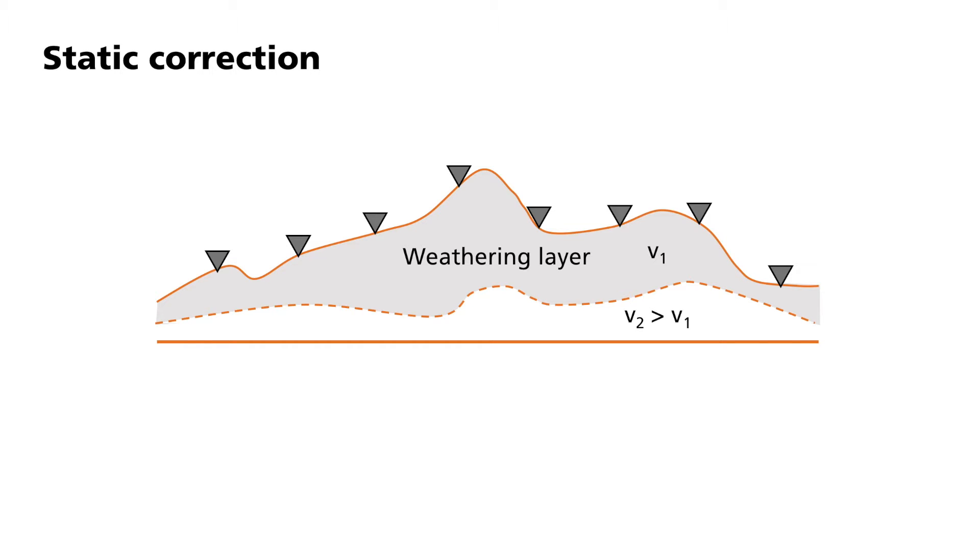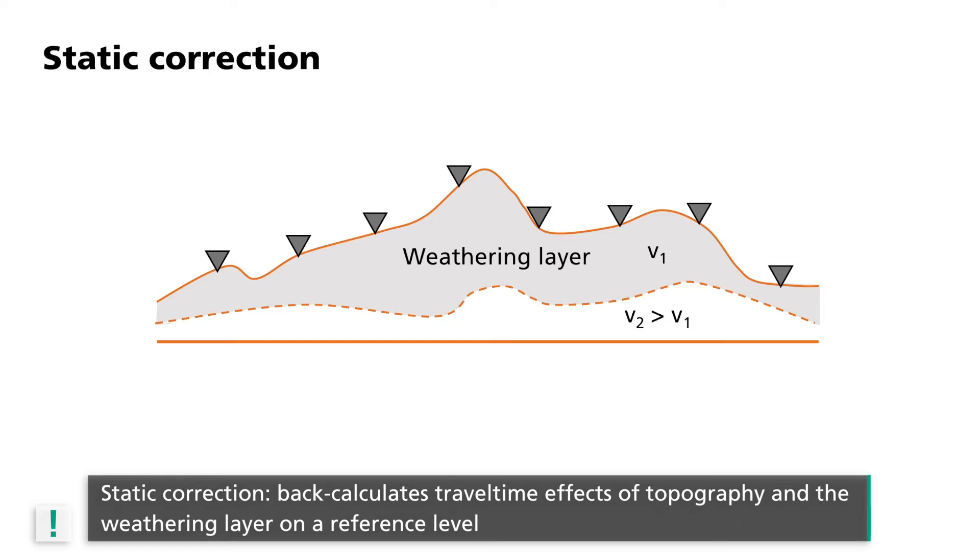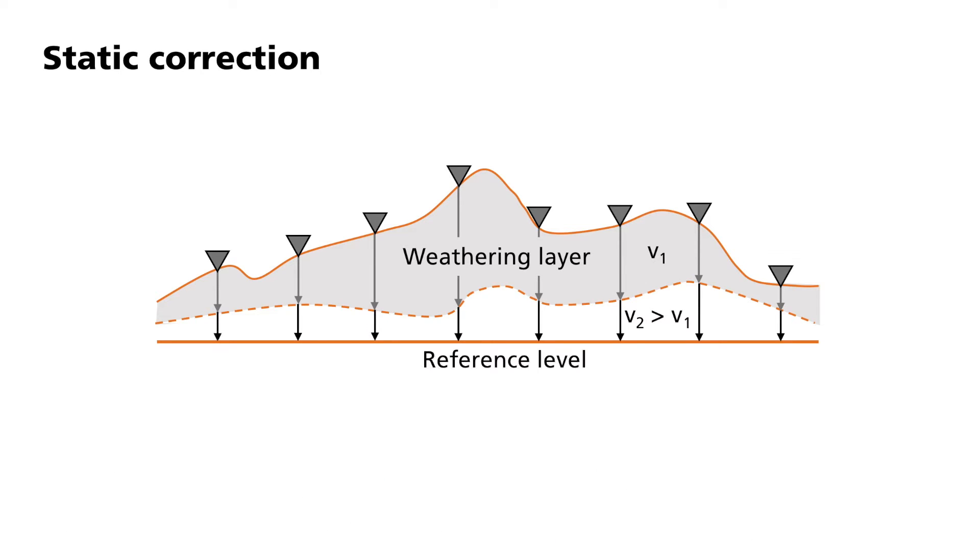For the travel times of the seismic waves, this means later arrivals for elevated stations and earlier arrivals for deeper stations. On the other hand, geophones on a thick weathering layer will systematically record later arrival times than those positioned on a thinner layer. The propagation velocity of the weathering layer and the rocks underneath is assumed to be constant. These are measured together with the corresponding thicknesses in additional investigations. By static correction, then the travel time effects of topography and the weathering layer are back-calculated on a reference level for all seismic traces to the so-called reference datum, which, in this example, is this line.